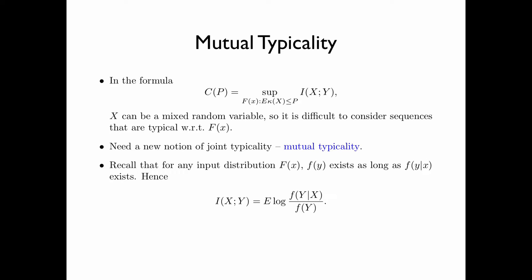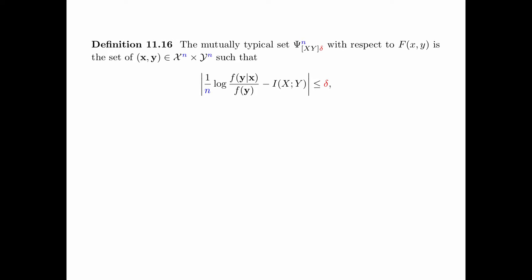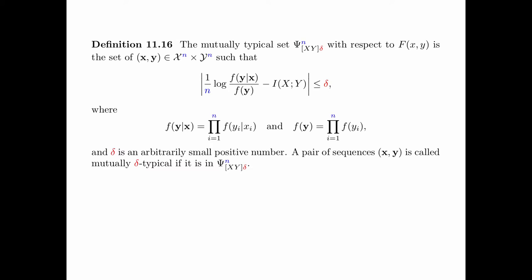The definition of mutual typicality will be based on this form. The mutually typical set psi_{XY,delta,n} with respect to a joint CDF f_{XY} is the set of all pairs of sequences (x, y) such that the absolute value of 1/n times log(f(y|x) / f(y)) minus I(X;Y) is less than or equal to delta. Where f(y|x) equals the product from i equals 1 to n of f(y_i | x_i), and f(y) equals the product from i equals 1 to n of f(y_i). Here delta is an arbitrarily small positive number. A pair of sequences (x, y) is called mutually delta-typical if the pair is in the mutually typical set psi_{XY,delta,n}.